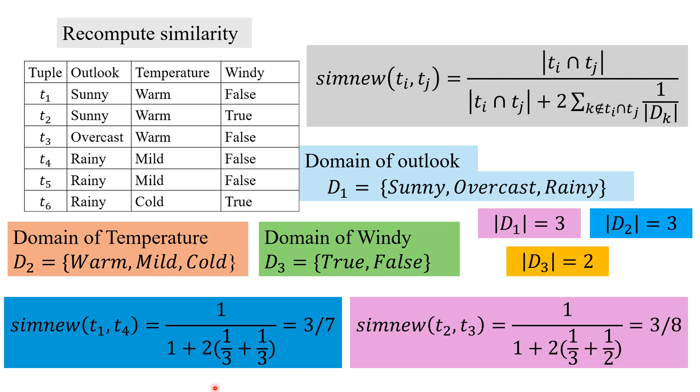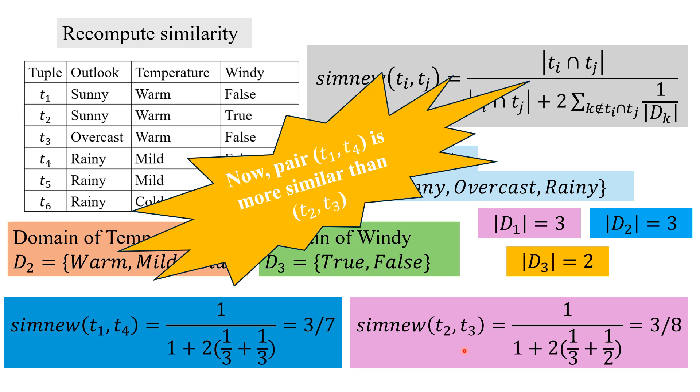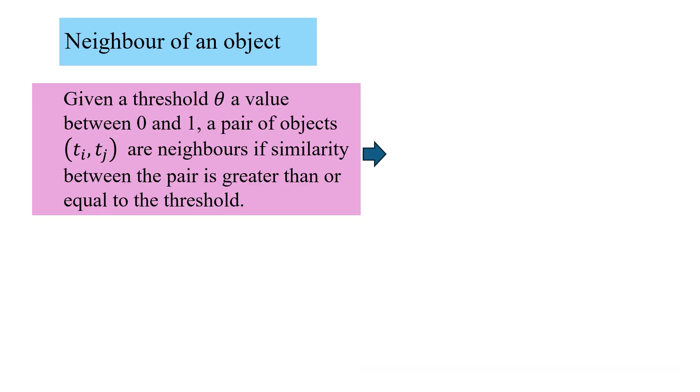It is 3 by 7 and this is 3 by 8, which means t1, t4 is more similar than t2, t3. In the previous measure where we did not take the weighted values of the domain size, it was the same.